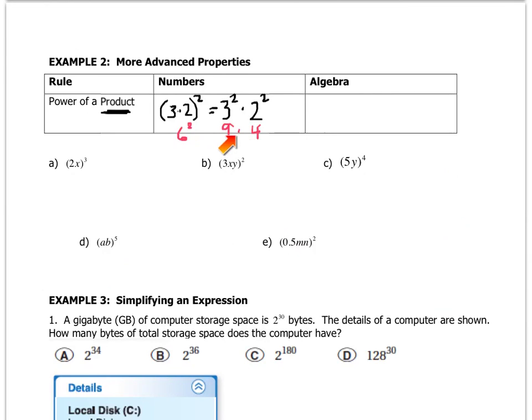And that's what it would look like in numbers. In algebra, we would write a times b to the n equals a to the n times b to the n. That's the algebraic way that you would see this written.